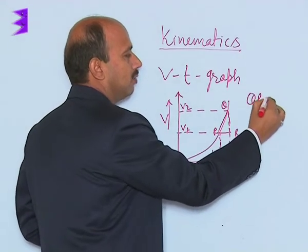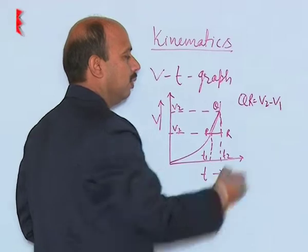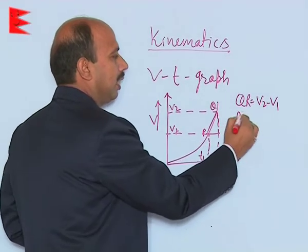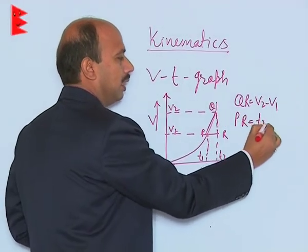QR is equal to V2 minus V1 and PR is equal to t2 minus t1.